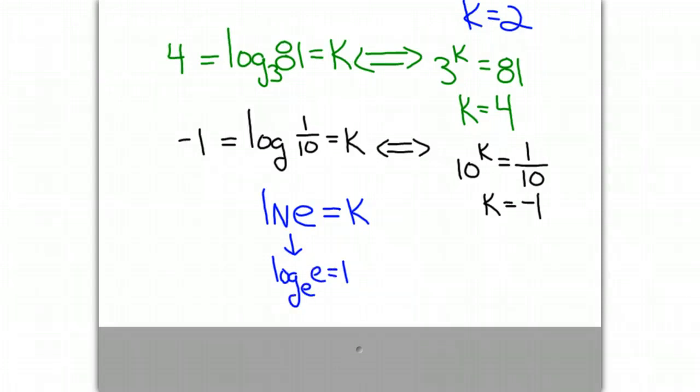And converting to its exponential form, that says e to the k is equal to e. And the only way that will be true is if k is equal to 1. So we know that the ln of e is equal to 1.